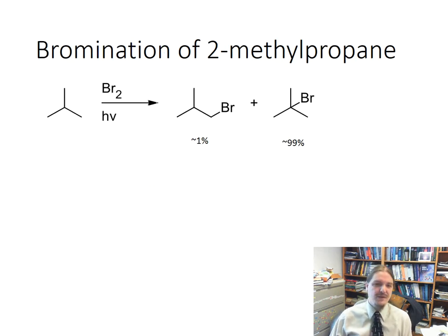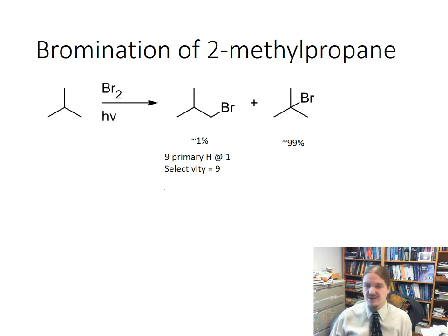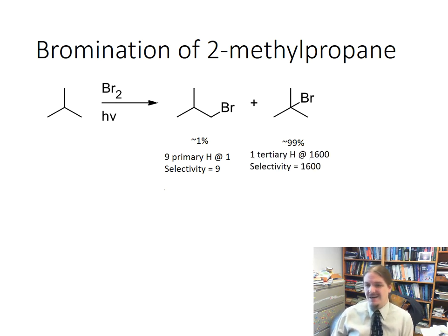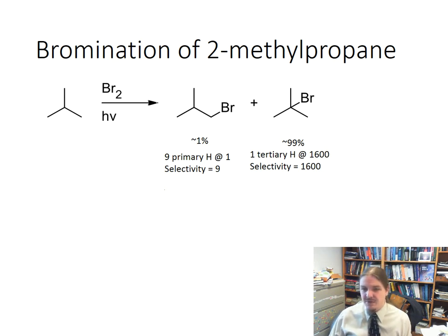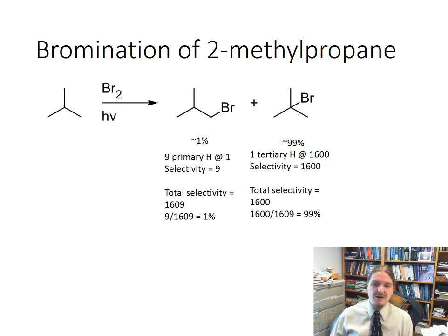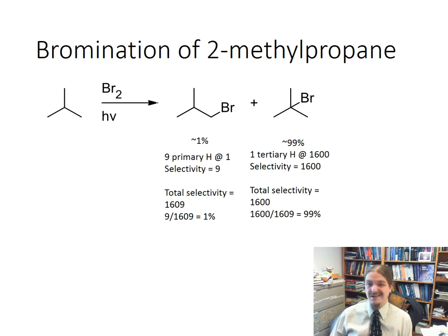Let's do the same analysis for bromine. Same thought process: 9 primary hydrogens with selectivity of 1 gives 9 ways to get the primary product. But that single tertiary hydrogen is 1,600 times more reactive, making it 1,600 times more likely that bromine ends up there than at any individual primary hydrogen. Our divisor is now 1,609: 9 out of 1,609 is around 1%, and 1,600 out of 1,609 is 99%.